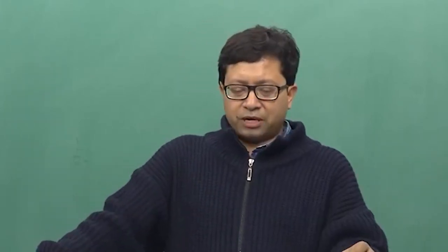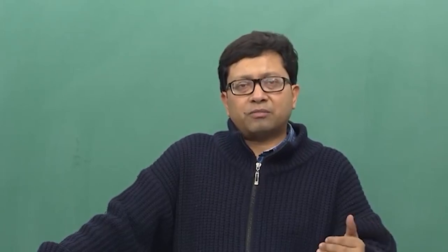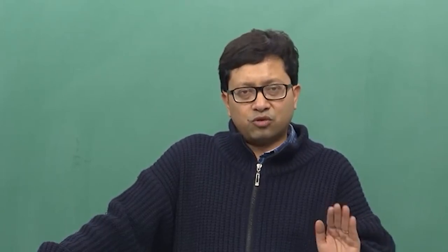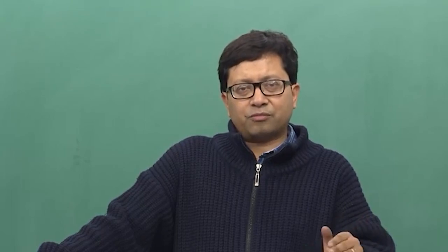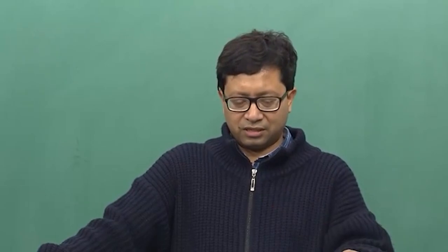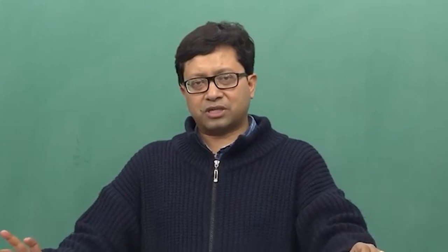Project management development cycle basically consists of the project life cycle. The project life cycle has an initial phase on an upward trend, then a plateau phase where demand slowly tapers or is constant, and after its utility life is over, the life of the project or product basically starts to decline. Our main motive is to manage the product life cycle in such a way that it makes sense to build the project on those lines. The system development cycle should have the conception phase, definition phase, execution phase, and operation phase in tandem with the overall project life based on which the project was decided.